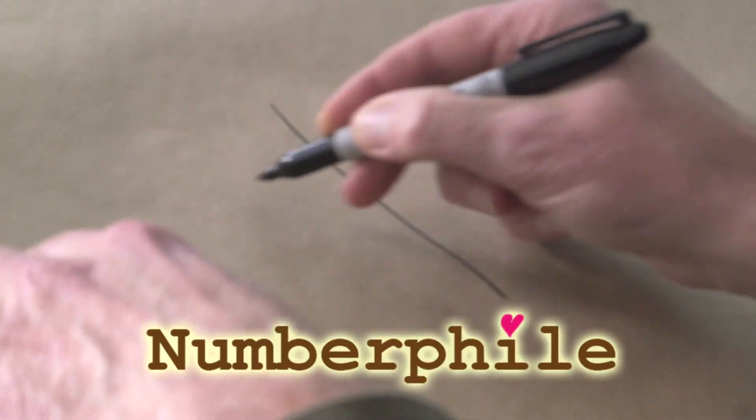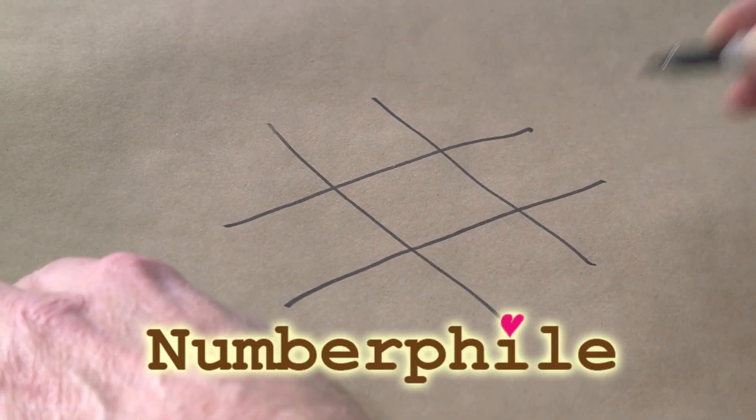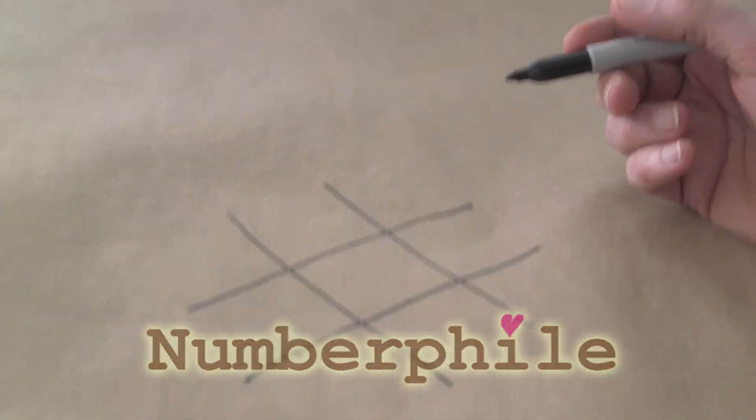Well, the game is tic-tac-toe. Some people know it as noughts and crosses, nine cells, and we have two players, X and O.